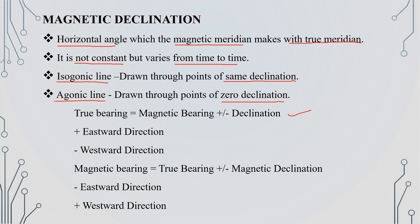To find the sign of declination, the east direction must be the main direction. The equation is: Magnetic Bearing = True Bearing ± Magnetic Declination.